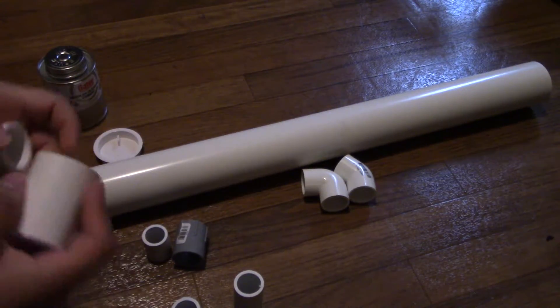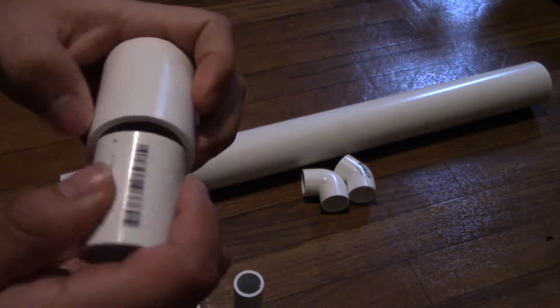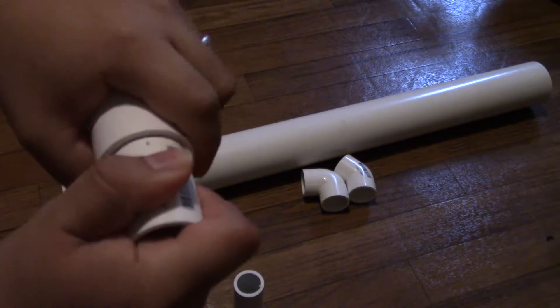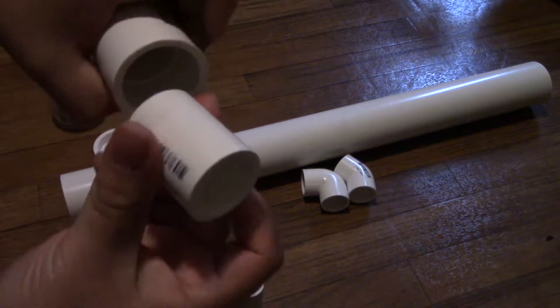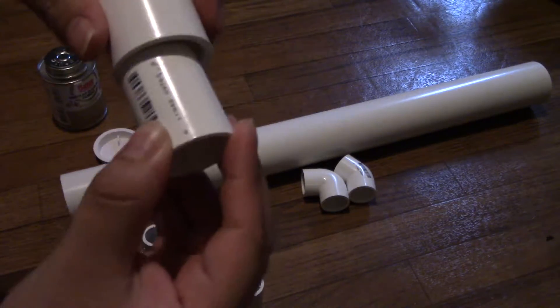But actually for some reason, we're going to use these couplings right here as a reducer because I couldn't find a reducer and I can never find one. For some reason they won't go in. I don't know why it's built like this. This side is smaller. One side is always smaller and one side goes in easily.